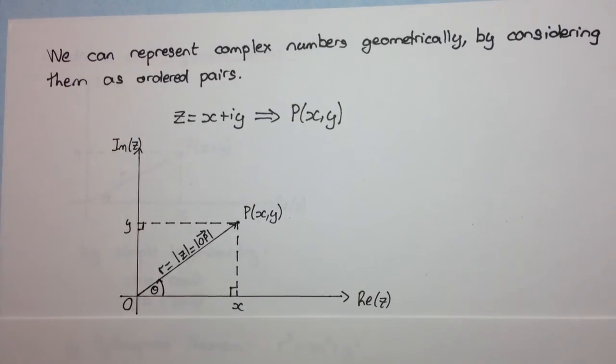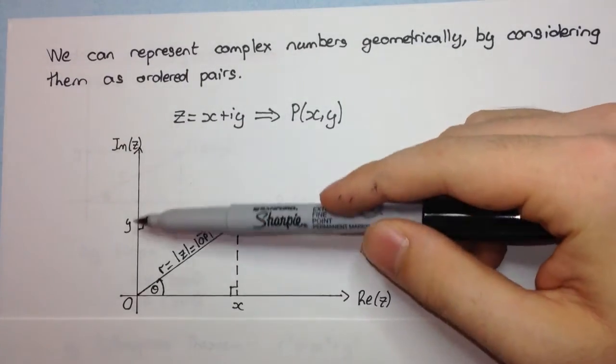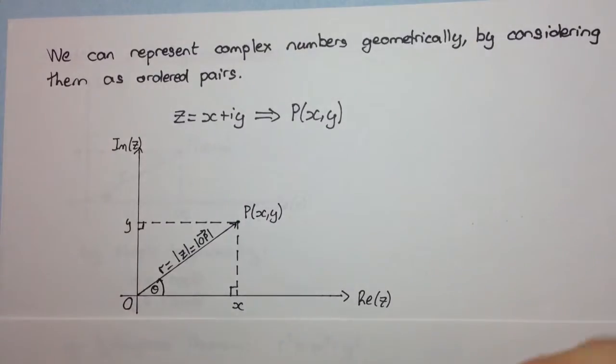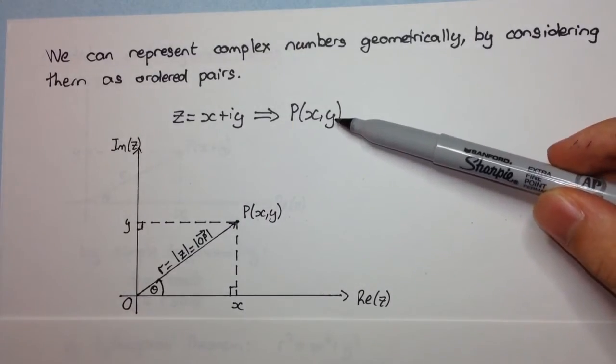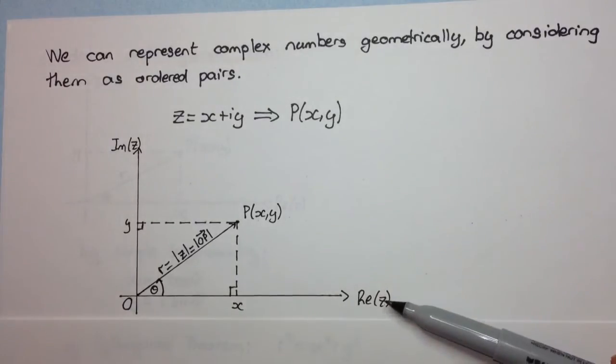So we have these two axes here. We have our usual y-axis we call the imaginary axis, so this is the imaginary part of z, because remember, the y-coordinate represents the imaginary part of z. And we have the same thing for the x-axis, it's called the real part of z.